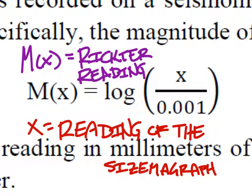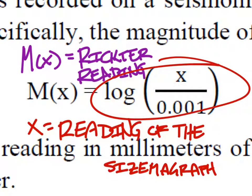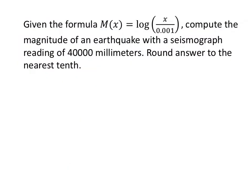If it gives us the seismograph reading, we can just replace that X value and plug it directly into the calculator. But if it gives us the Richter reading, we have to go into the exponential stuff. Here's our first problem: given the formula M of X equals log of X over 0.001, compute the magnitude of an earthquake with a seismograph reading of 40,000 millimeters. Round your answer to the nearest tenth, which means we'll need to use the calculator.